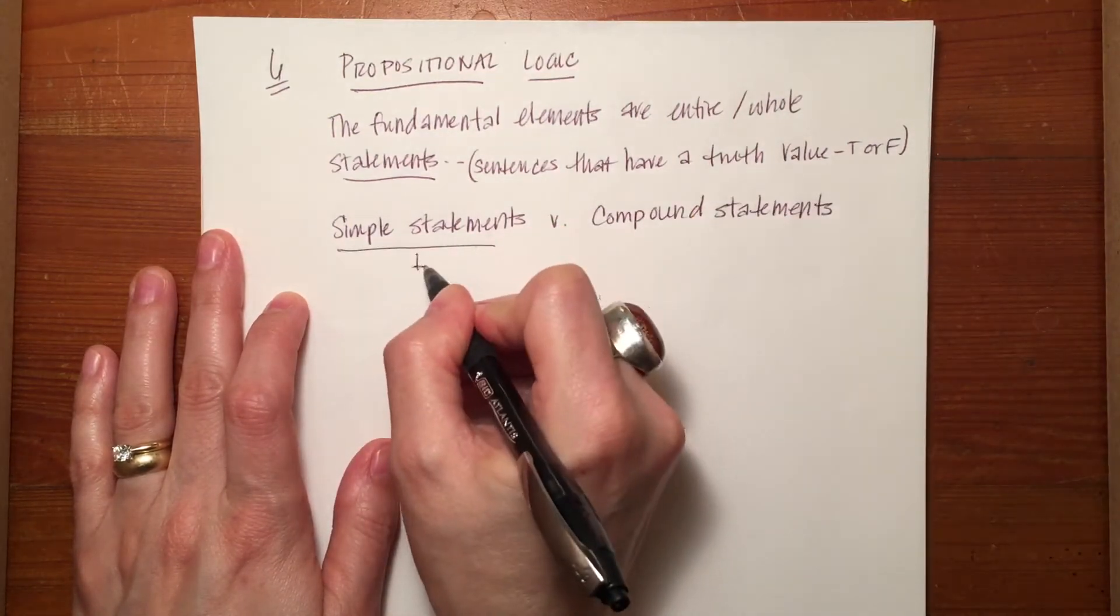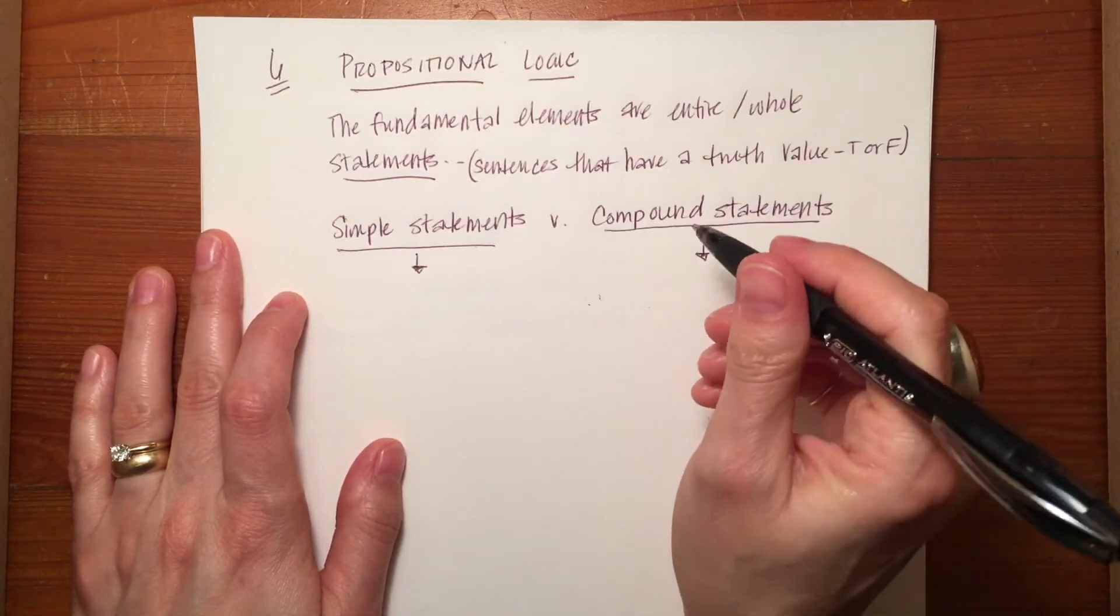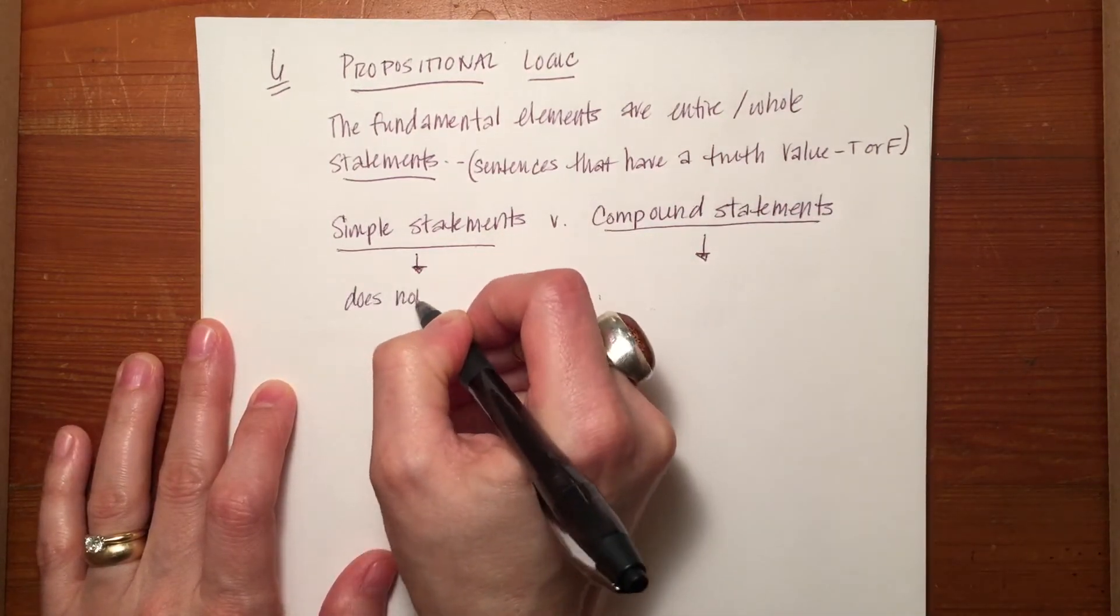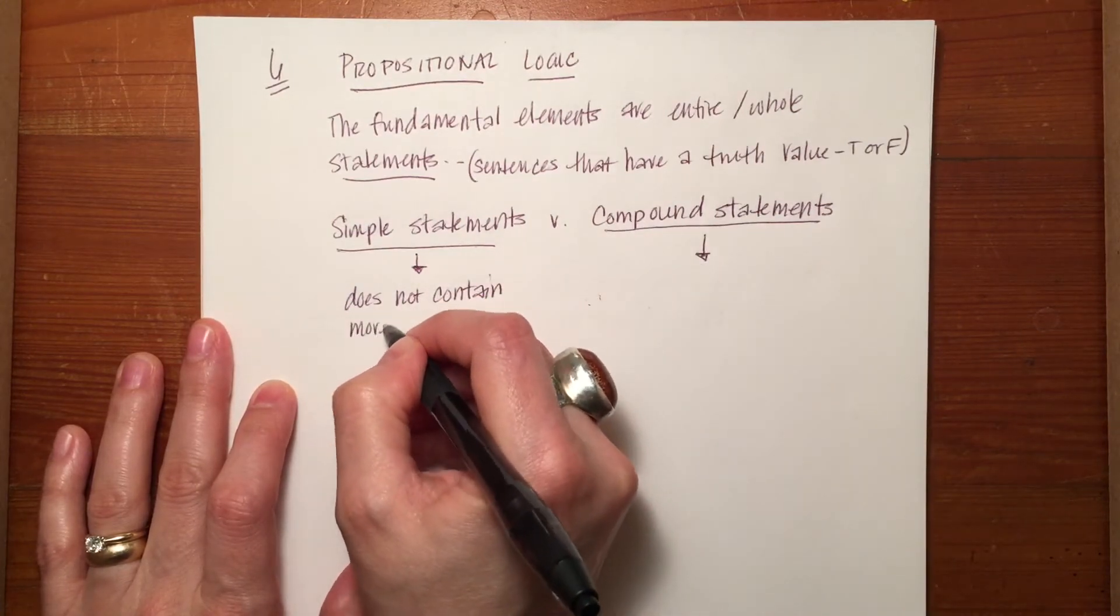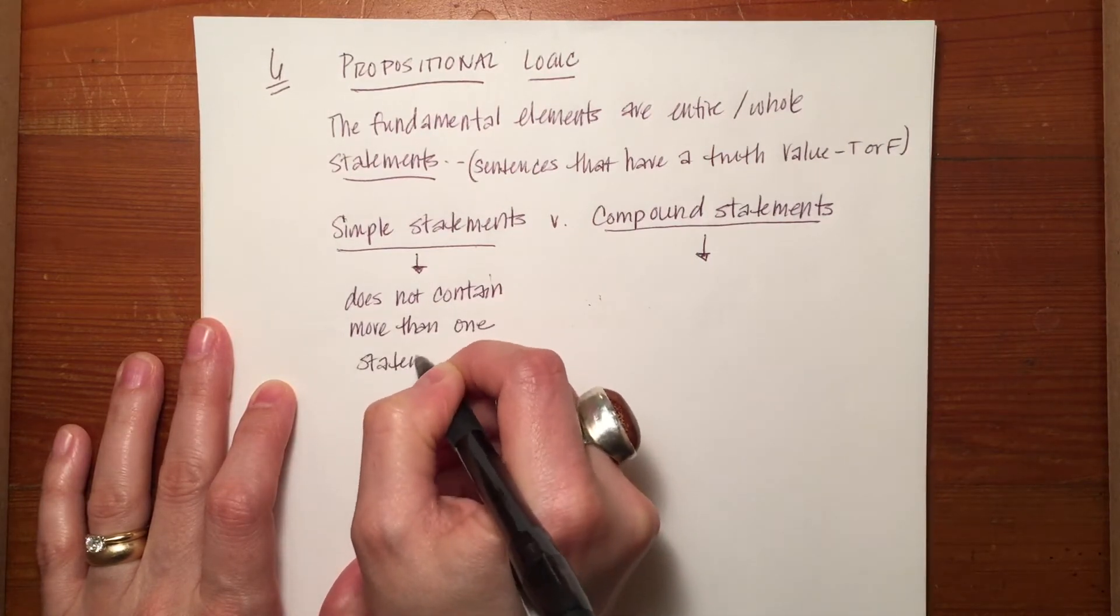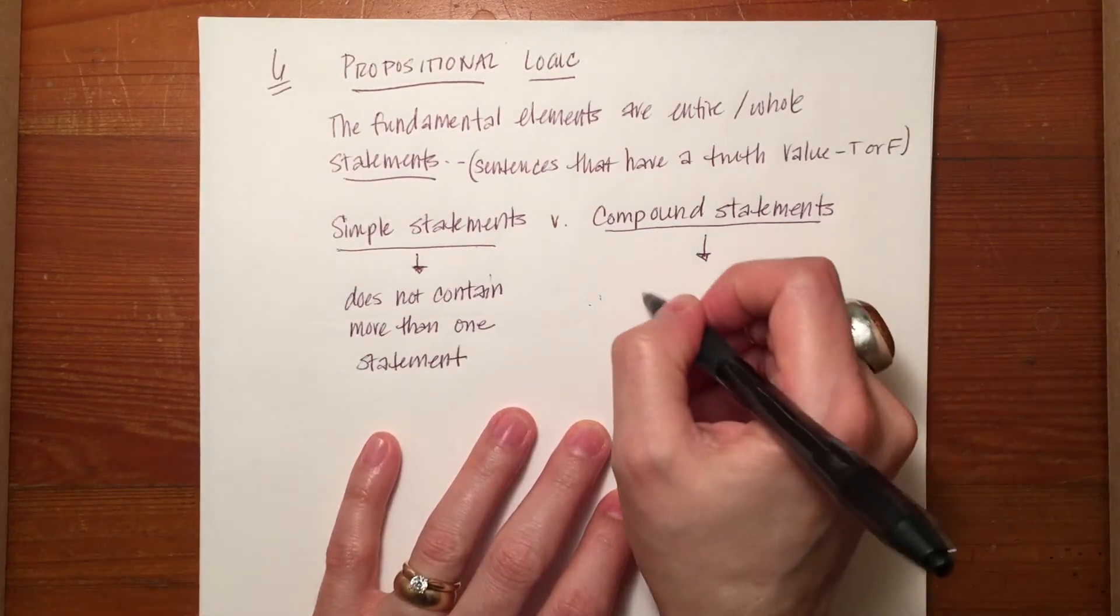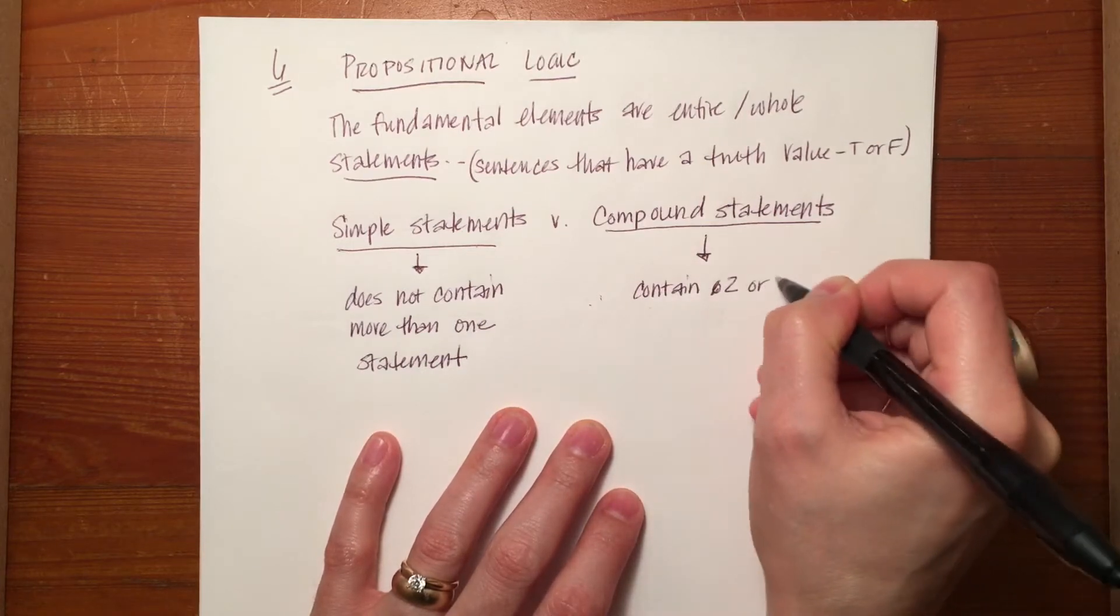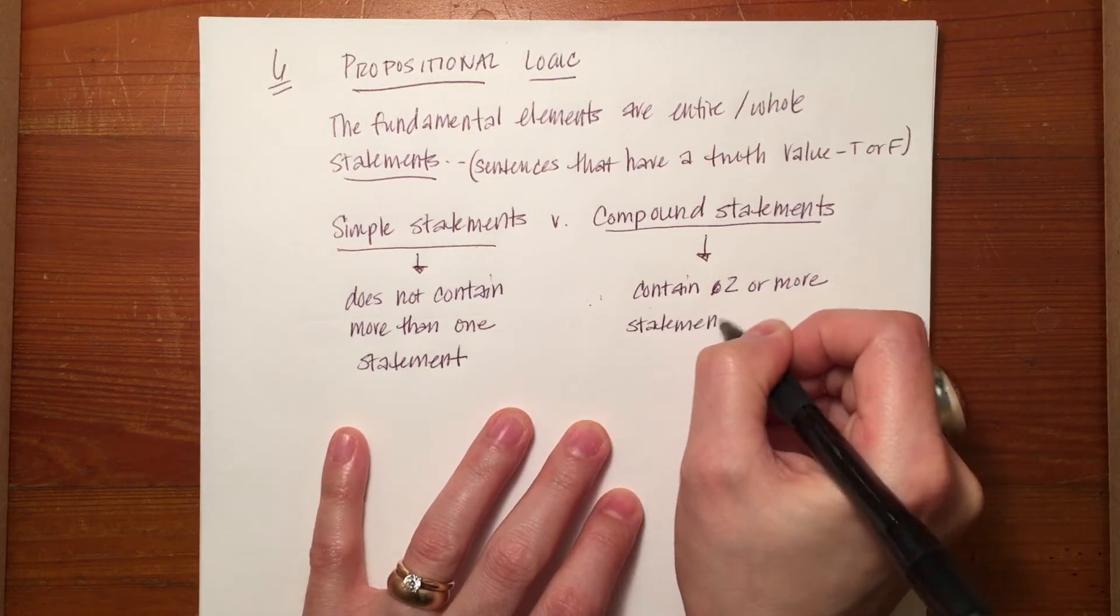There are simple statements versus compound statements. Simple statements, of course, can be defined as a statement that does not contain any other statement as a component, or does not contain more than one statement. And compound statements are exactly the opposite. They contain two or more statements.